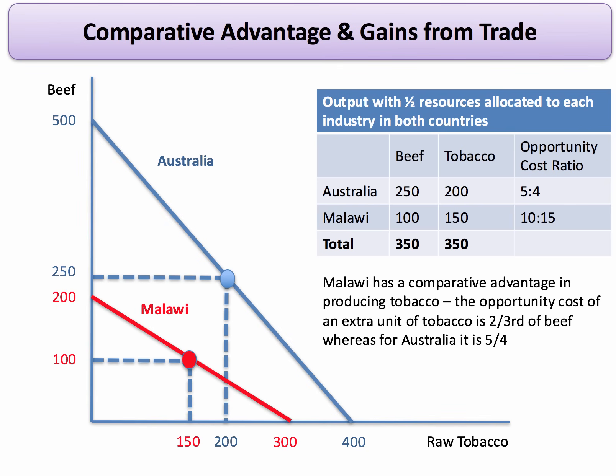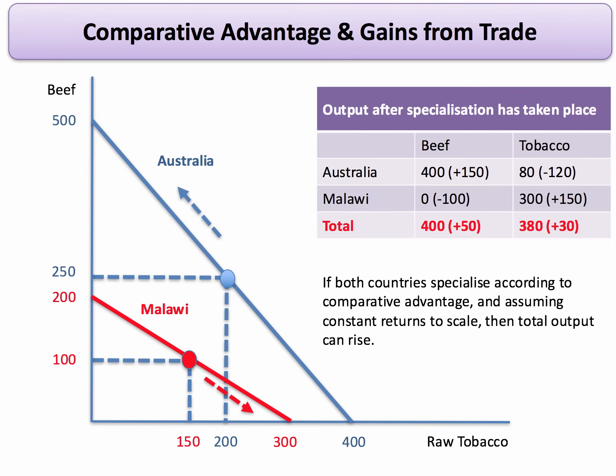So there is a difference in opportunity cost: Malawi has an advantage in tobacco, Australia in beef, and both should specialise. We find that, assuming constant returns to scale, if both countries fully specialise, they can increase the total output of both goods.